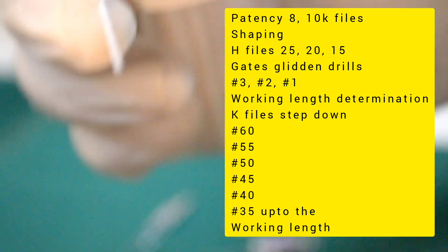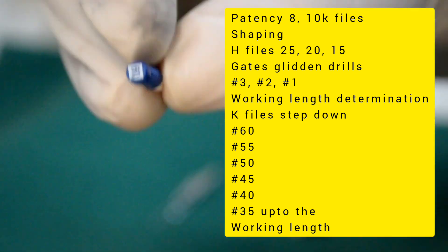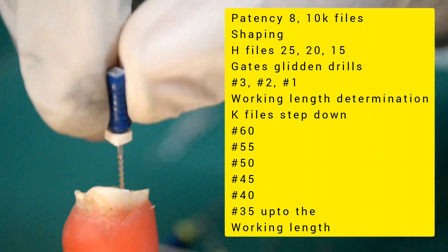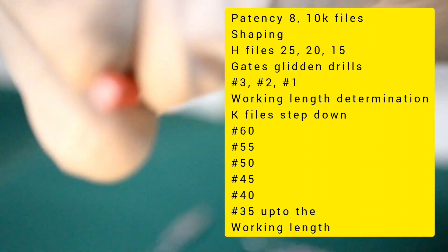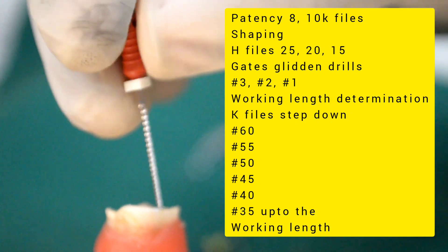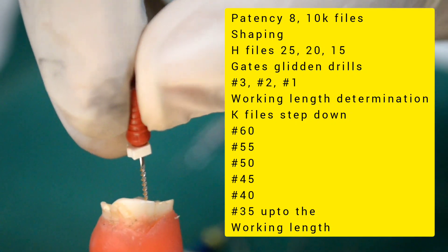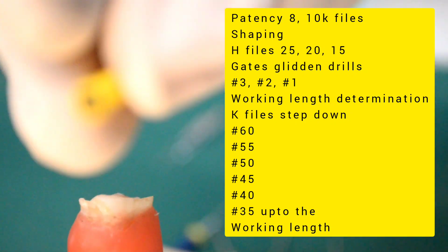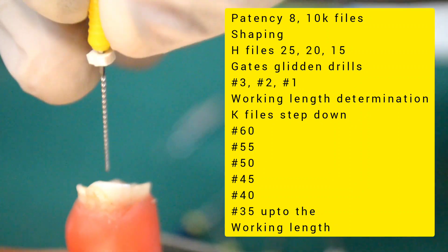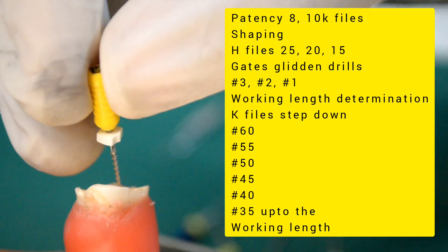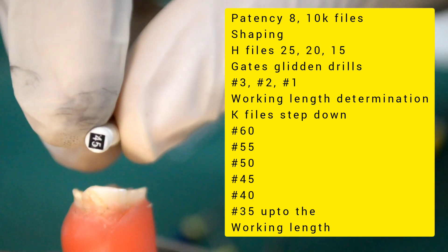Now place a 60K file in a watch winding motion until resistance is met. This is followed by placement of 55K file, next 50K file, in a decreasing order of file sizes until the apex is reached with a master apical K file.